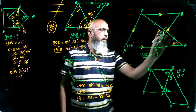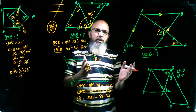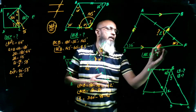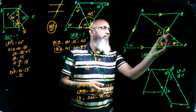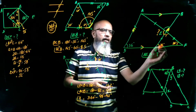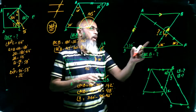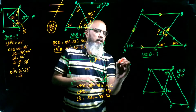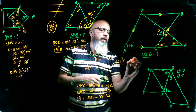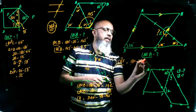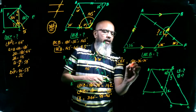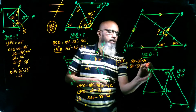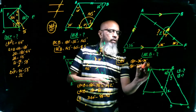We find angle CEF by subtracting: 180 - 36 - 36 = 180 - 72 = 108 degrees. So angle CEF = 108 degrees.